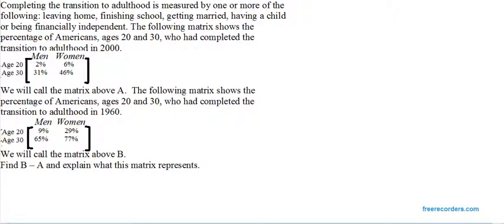2% of men age 20 had completed the transition, 6% of women age 20 had done so, 31% of men age 30 had completed the transition to adulthood, and 46% of women age 30 had done so.